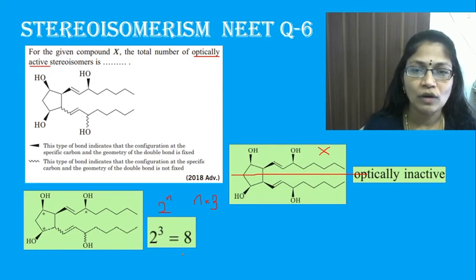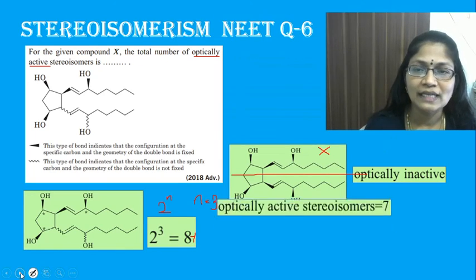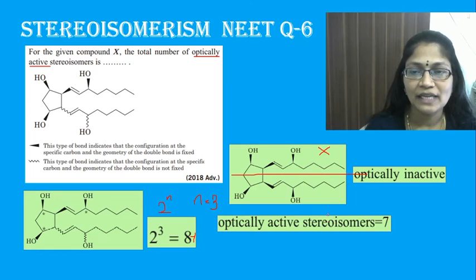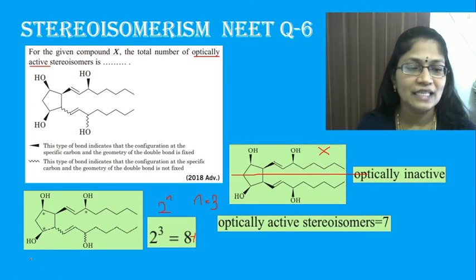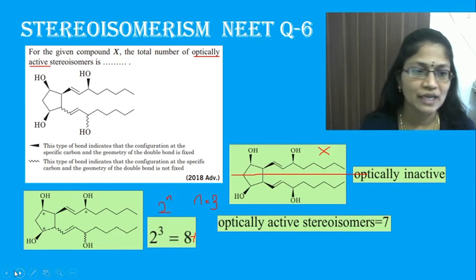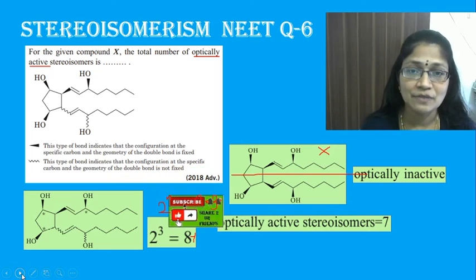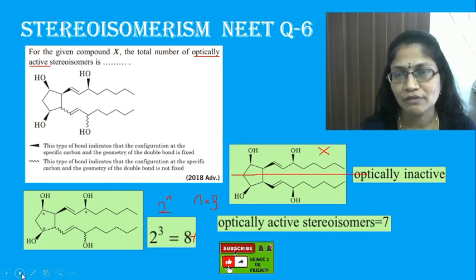Overall, 8 minus 1 gives us 7 optically active stereoisomers. Thanks for watching. If you are not subscribed to the channel, please subscribe and click the bell button so that you will get all upcoming videos. Thank you.